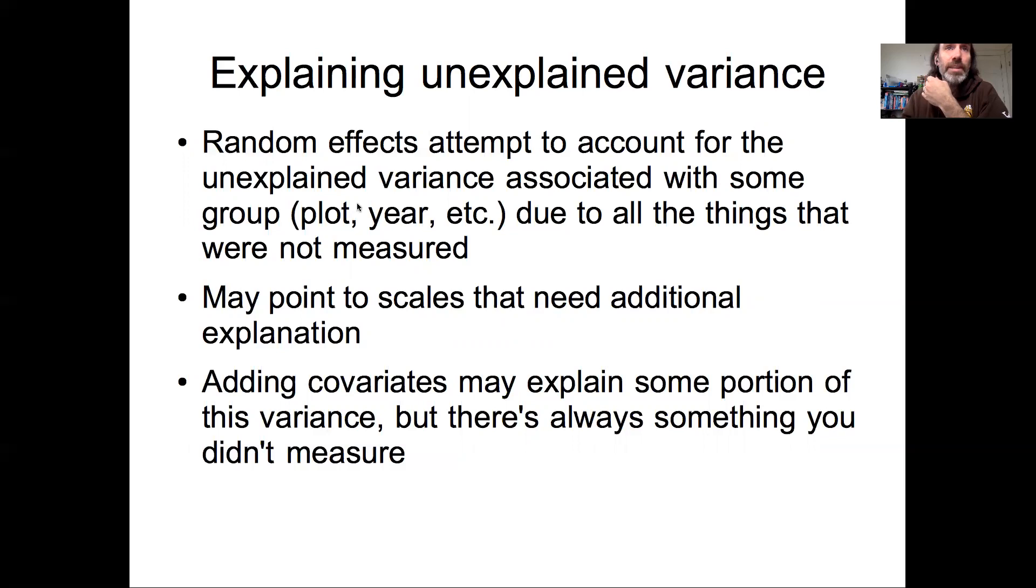So like in the earlier example, if the year effects are the dominant source of variability, I might first look at process models to explain why there might be year-to-year variability, such as climate or something like that. Whereas if plot effects are dominant in terms of the random effect variability, I might look at spatial factors, such as soils or topography that might explain the plot-to-plot variability.